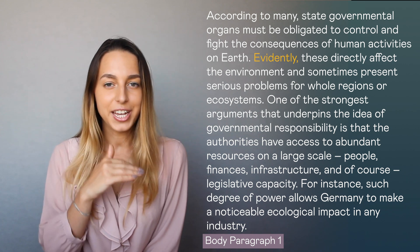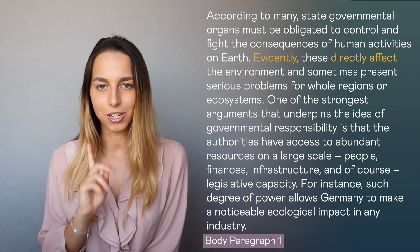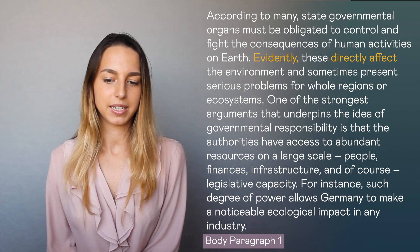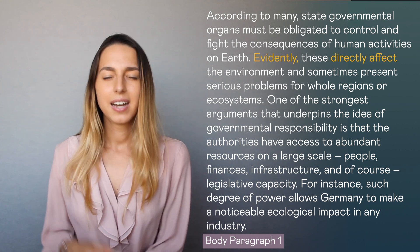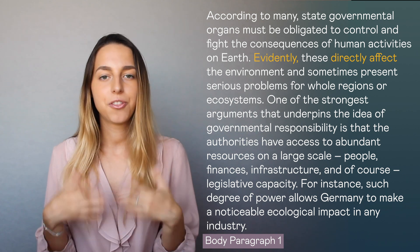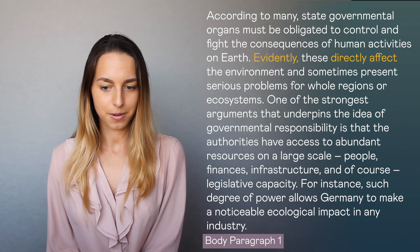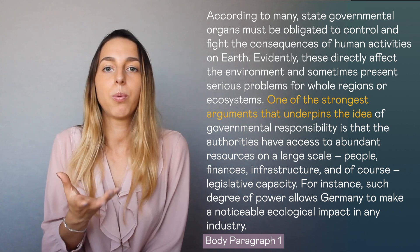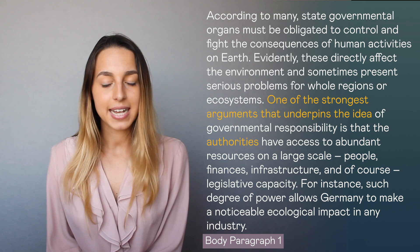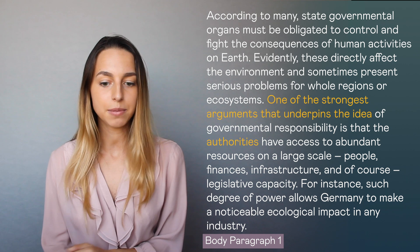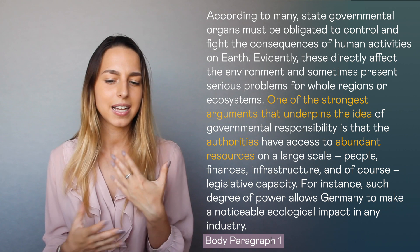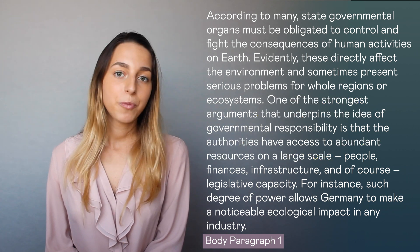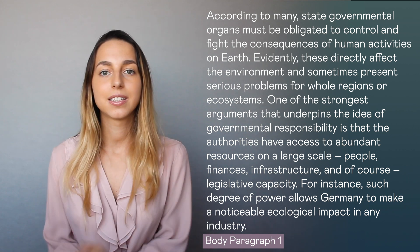'Control the consequences of human activities on earth' is a paraphrase of 'impact on the environment.' Then 'evidently' is another linking word. Note the difference between 'affect' and 'effect' — they sound very similar but are two different words. We also use 'the authorities' as another paraphrase for 'the government,' and the adjective 'abundant' before 'resources' adds depth. Don't forget the indefinite article in the collocation 'on a large scale.' The practical example of Germany is introduced with the linking word 'for instance.'